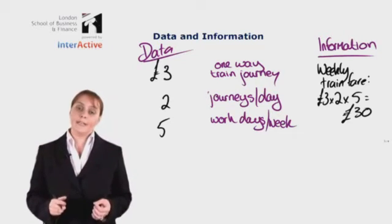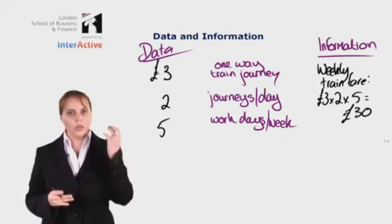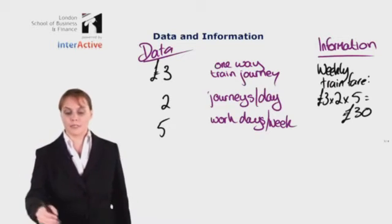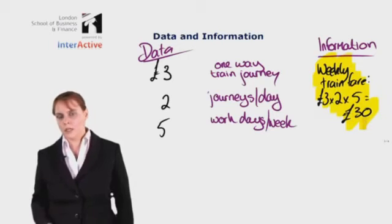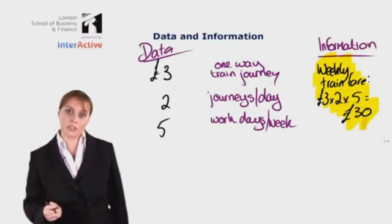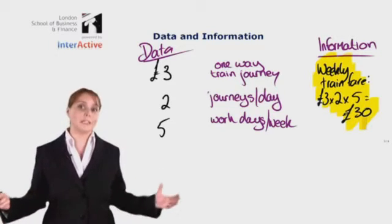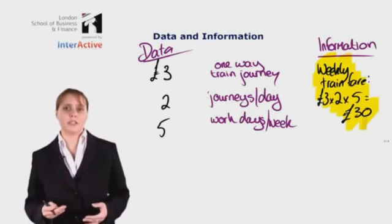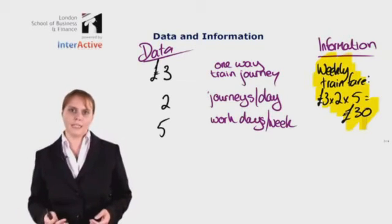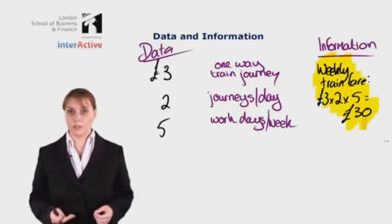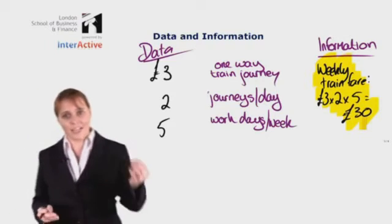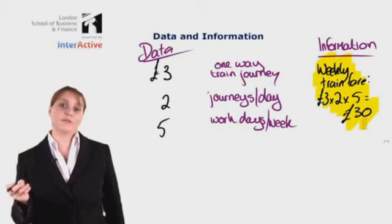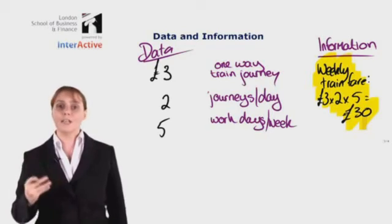What we see here is that data is raw, unprocessed information, whereas information is data which has been processed into some meaningful format. Now we can use this information to help us make decisions. If I'm doing my weekly or monthly budget, I know I need to include £30 for train fares. Or perhaps I can use this to try and find a cheaper way of getting in and out of work — for example, comparing it to bus journey prices. Data is unprocessed; information is something meaningful that we can use to plan for the future and make decisions.